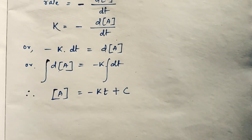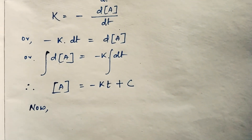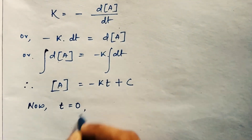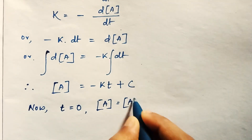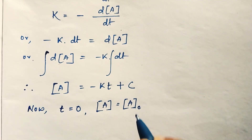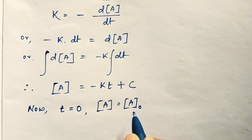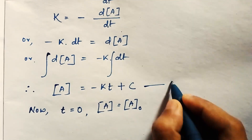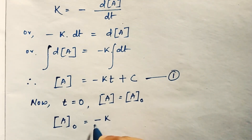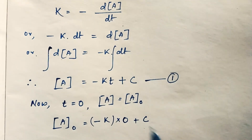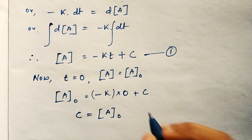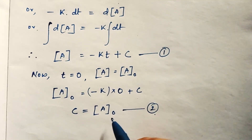At the initial stage of the reaction — that is, at t = 0 — the concentration of the reactant is A₀, the initial concentration. Substituting these values into the equation gives: A₀ = -k · (0) + C, so we get C = A₀.